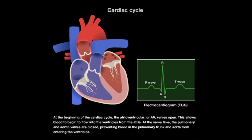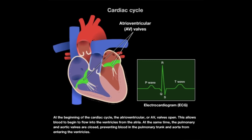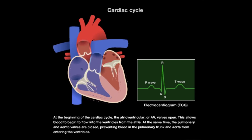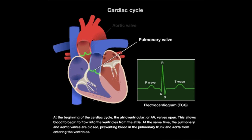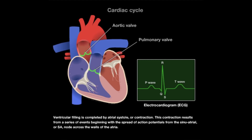At the beginning of the cardiac cycle, the atrioventricular, or AV, valves open. This allows blood to begin to flow into the ventricles from the atria. At the same time, the pulmonary and aortic valves are closed, preventing blood in the pulmonary trunk and aorta from entering the ventricles.